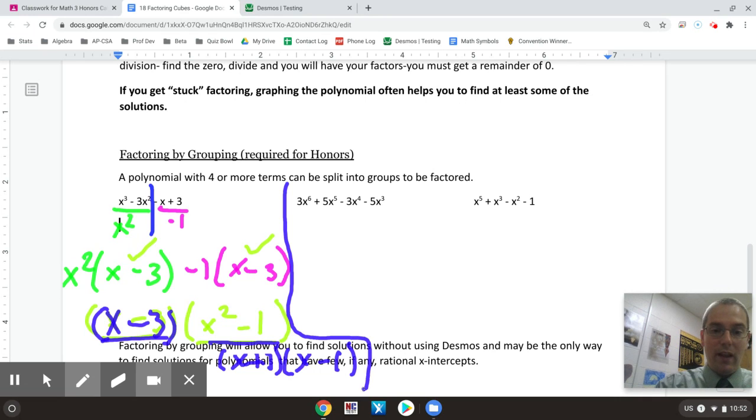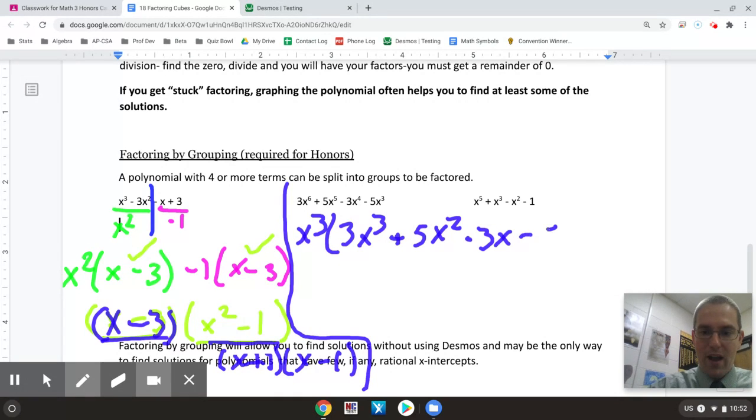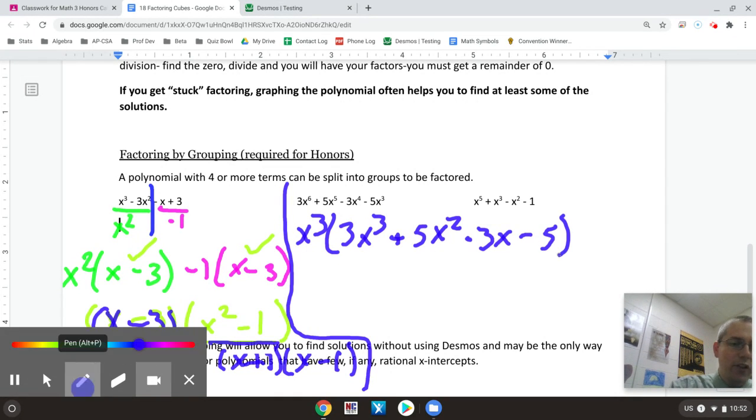So if I'm looking at this next one here, I would go ahead and take out my GCF of x to the third before I attempt a grouping. So when I take out x to the third, I'm left with three x to the third plus five x squared minus three x minus five. So if it has a GCF, go ahead and take it out and then basically group what's left.